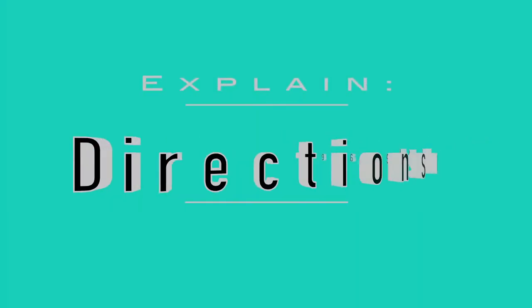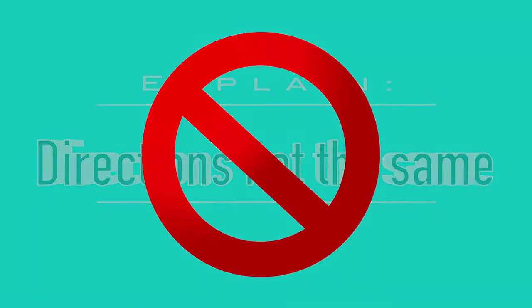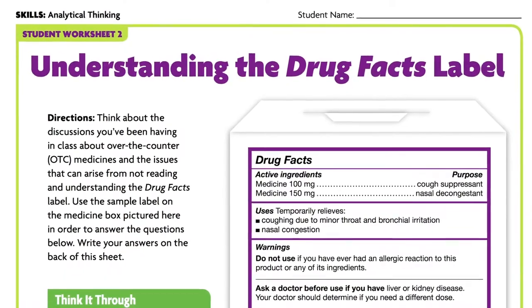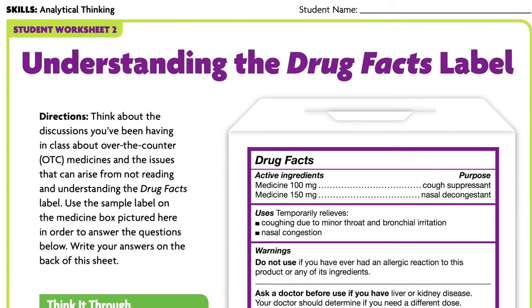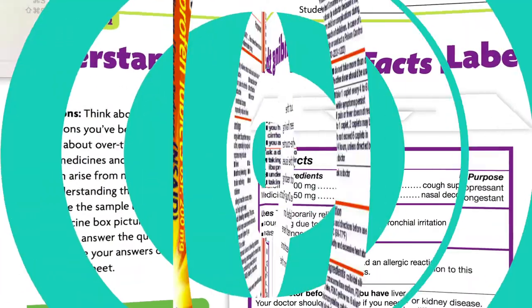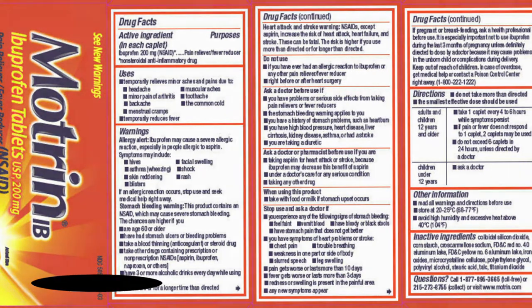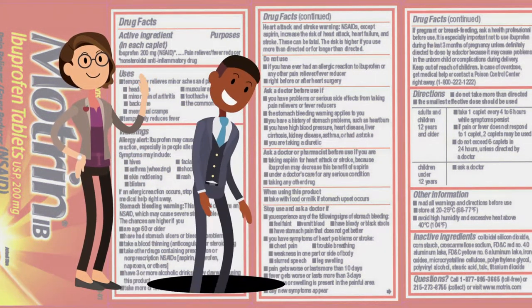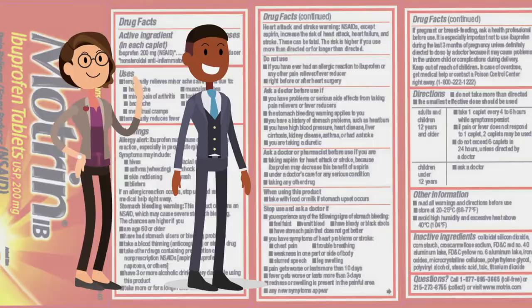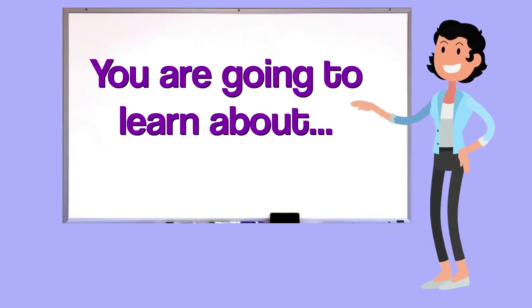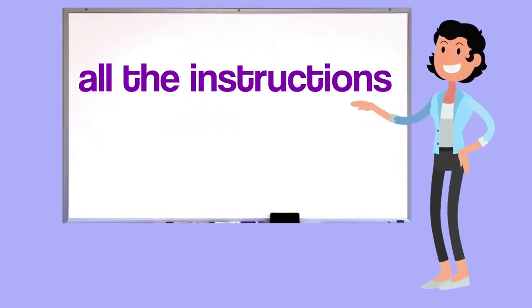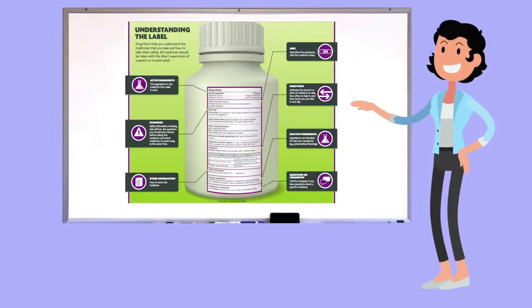Explain that all directions are not the same. Sometimes the directions on the drug facts label won't appear at the top of the page like on a test. You may have to look for them, and you should always ask your teacher, parent, or trusted adult to clarify them. Explain that the class is going to learn about the importance of reading and following all of the instructions found on the drug facts label of OTC medicines.